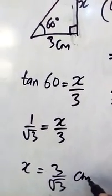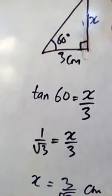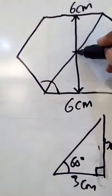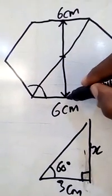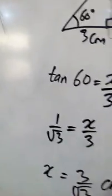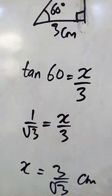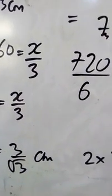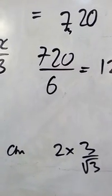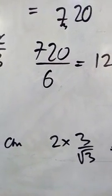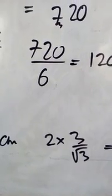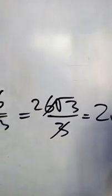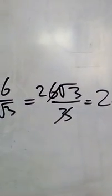Now I'm going to double this to be able to find the remaining length, because all I found was from here to here. I'm going to double it, so that's going to leave me with 2 times 3 over √3, and that's going to be 6 over √3, which is 6√3 over 3, and that will leave me with 2√3.